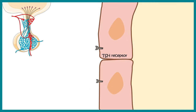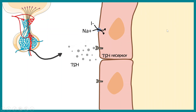Everything starts from the pituitary. The TSH hormone is secreted from the pituitary and targets the thyroid gland. In the thyroid follicular cells, there are many TSH receptors. The TSH–receptor interaction leads to a signaling cascade which ultimately allows thyroglobulin to be processed into thyroid hormone.